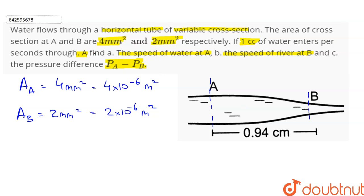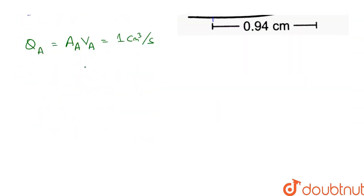Firstly, we need to find the speed of water at A. We are given that 1 cm cube of water enters per second through A. That means the volume flow rate at A, denoted as QA, which is given by area of cross-section of A into speed of flow at A, is equal to 1 cm cube. So QA can also be written as 1 into 10 to the power minus 6 meter cube per second, and it is equal to area of cross-section at A into speed of flow at A.